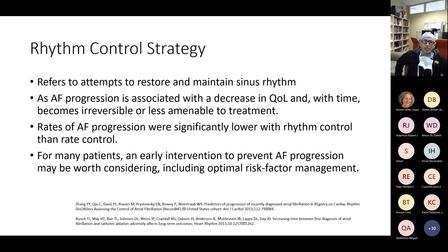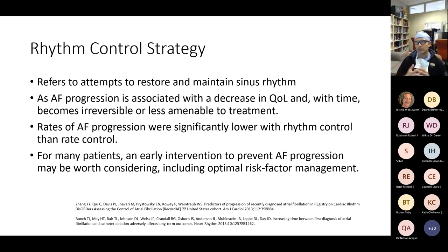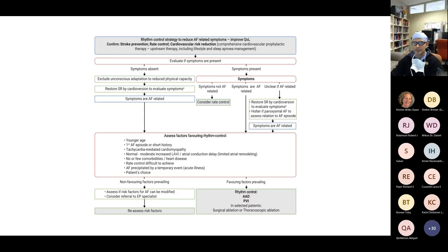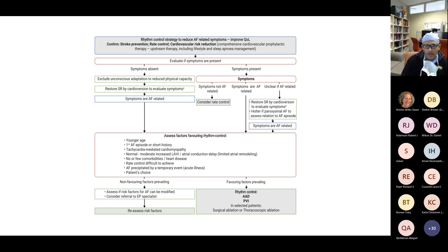Rhythm control strategy refers to the attempt to restore and maintain normal sinus rhythm. AF progression is associated with decreased quality of life as it becomes less amenable to treatment. Rates of AF progression were significantly lower with rhythm control than rate control. An early intervention to prevent AF progression may be worth considering, including optimal risk factor modification. Rhythm control tends to favor younger patients, first episodes of AF, tachycardia-induced cardiomyopathy, normal to moderate left atrial size, fewer comorbidities, difficult-to-achieve rate control, AF precipitated by a temporary event, or patient preference.